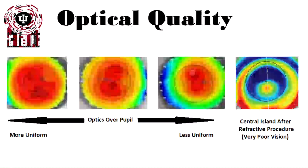Looking at the pupil also allows us to assess the optical quality for that person. Here we have four examples: the cornea starts out relatively uniform over the pupil, and as we move to the right the topography becomes less uniform or more irregular over that pupil, so vision gets worse from left to right. The patient on the far right has a central island after ortho-K, and their vision is severely impaired because of this localized island of high curvature blocking their vision.